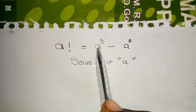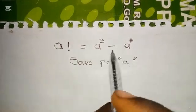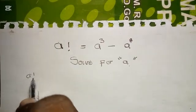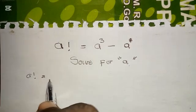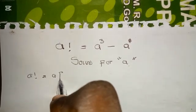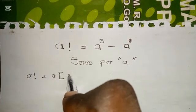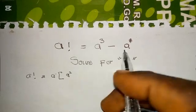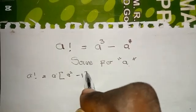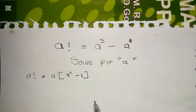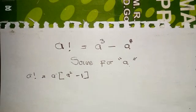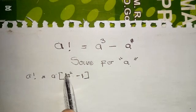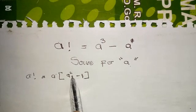Firstly, let's factor out a. a is common in both terms, so we have a factorial equals a times open bracket a squared minus one.